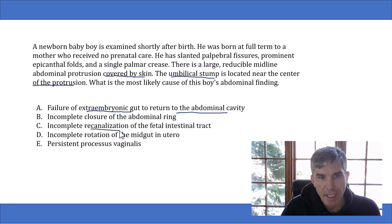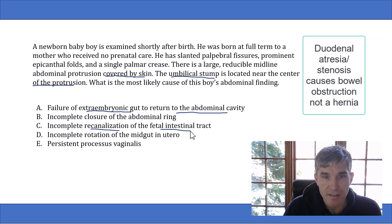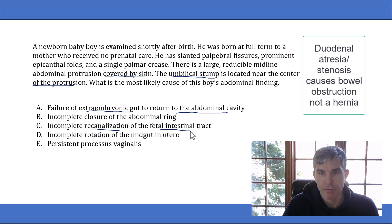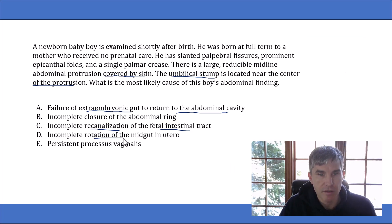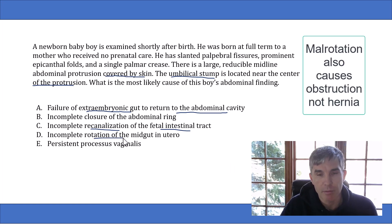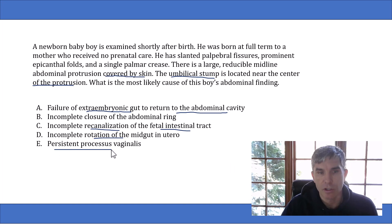Incomplete recanalization of the fetal intestinal tract describes duodenal atresia or stenosis, which leads to a bowel obstruction, not bowel contents protruding from the abdominal wall. The same is true for incomplete rotation of the midgut in utero — this describes midgut malrotation, which also leads to a bowel obstruction. Finally, a persistent processus vaginalis leads to an inguinal hernia, but not to an umbilical hernia.